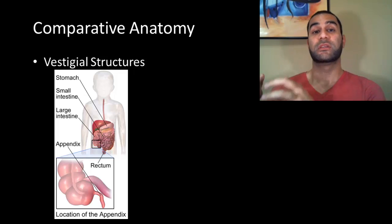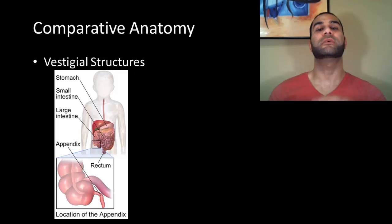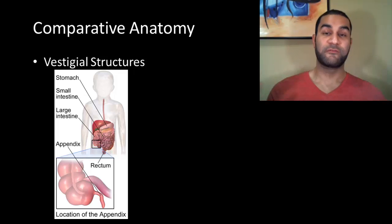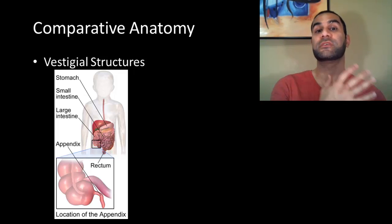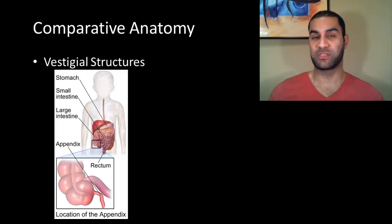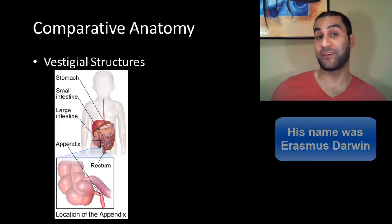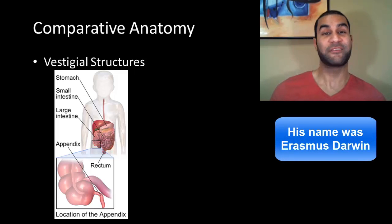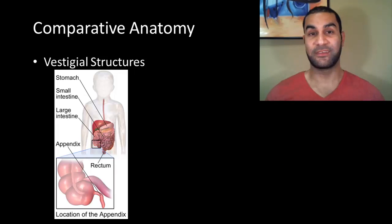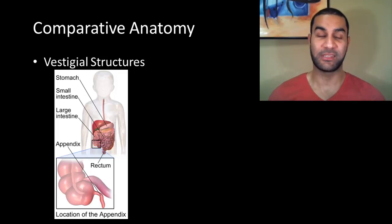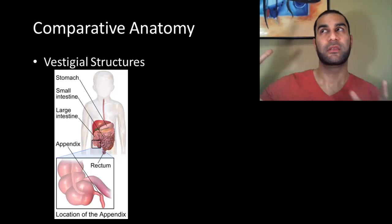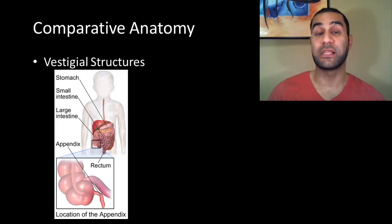Scientists use vestigial structures to connect, and possibly predict, and possibly try to visualize the environmental conditions of previous descendants of that current species. Vestigial structures are actually something that was brought out by Charles Darwin's grandfather. Darwin definitely had a lot of family ties to this idea of the natural progression of life — he didn't just come up with it on his own. But this is a very unique component that is used to think about, and use as context clues, what species could have been like a long time ago.